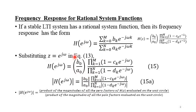We evaluate on the unit circle because the system is stable. If a system is stable, then its impulse response must be absolutely summable, resulting in a finite value.